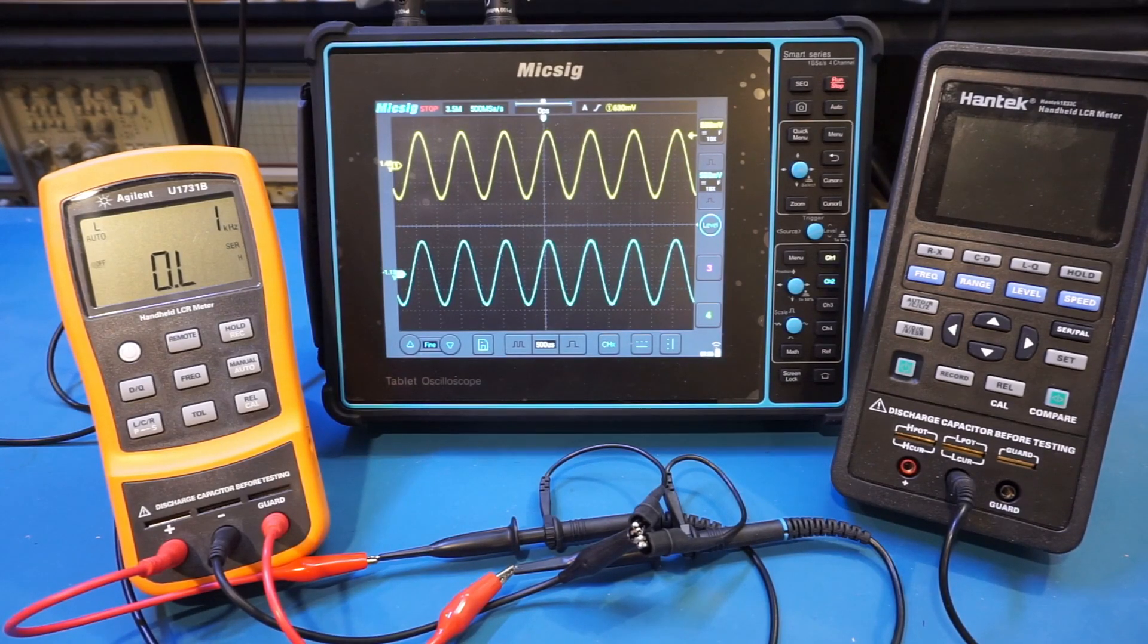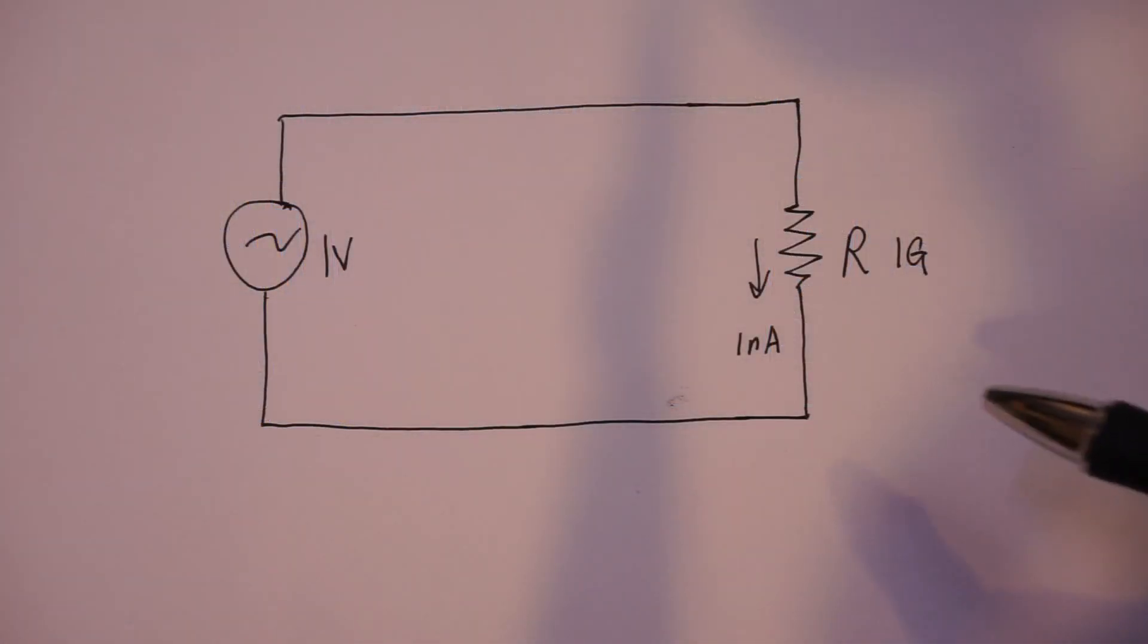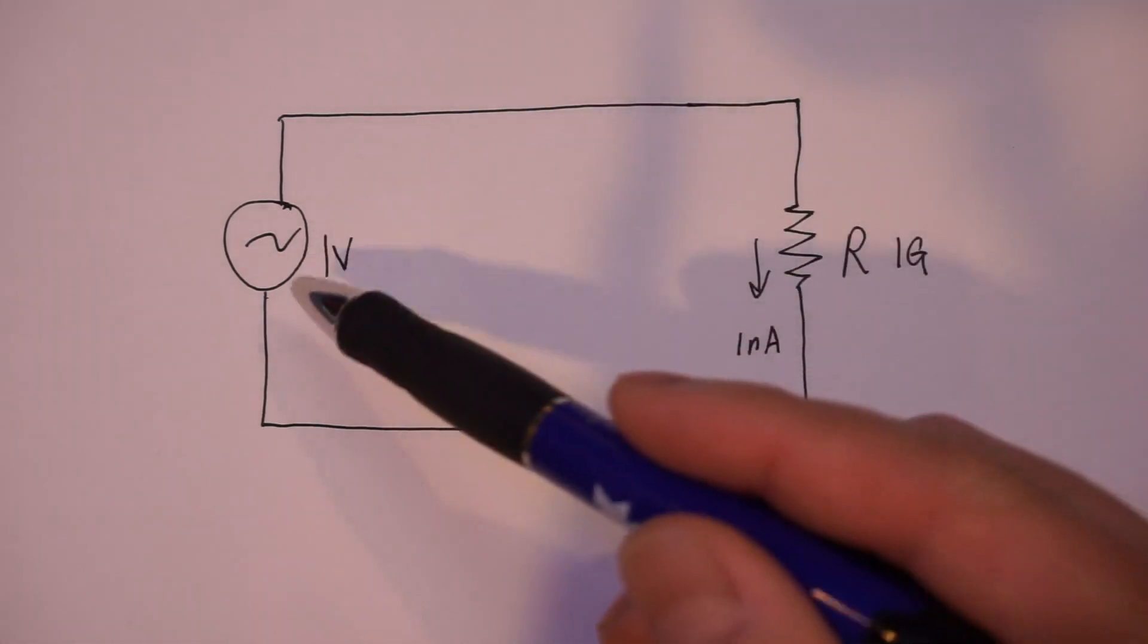When you are measuring a high impedance component, say a high value resistor in the gigaohm range or a very small capacitor in the picofarads range, the cable leakage and stray capacitance can become an issue. Let's take a look at the issues at hand in either measurement scenarios.